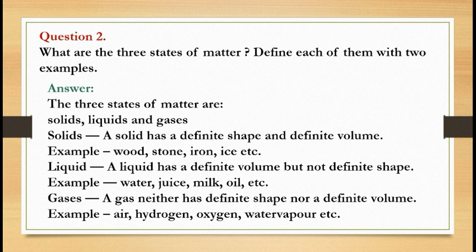Liquid: A liquid has a definite volume but not a definite shape. Examples: water, juice, milk, oil, etc. Gases: A gas neither has a definite shape nor a definite volume. Examples: air, hydrogen, oxygen, water vapor, etc.